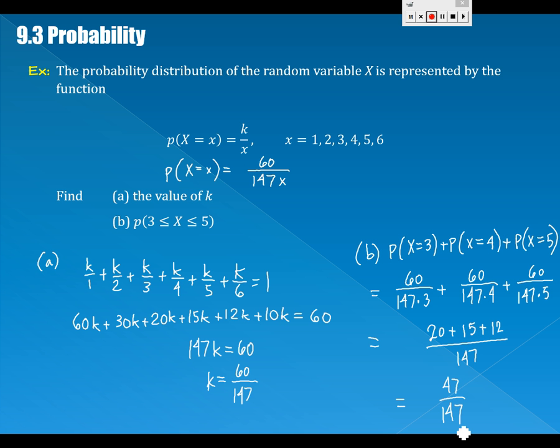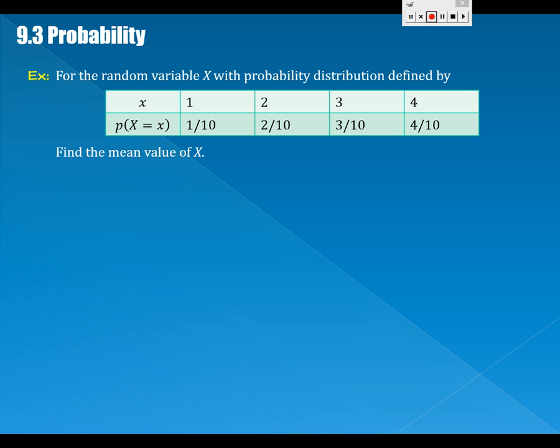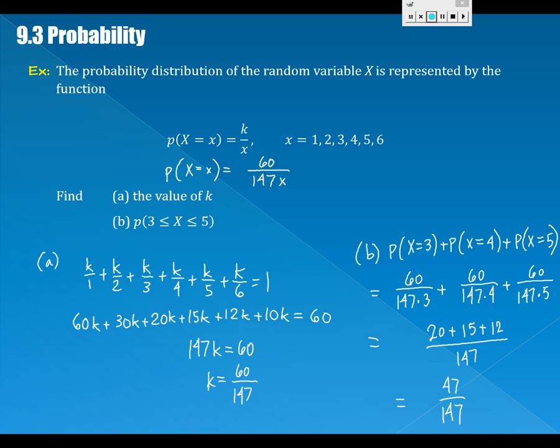Those are all mutually exclusive, so that's just 60/147 times 3 plus 60/147 times 4 plus 60/147 times 5. What does that come out to? 47/147.